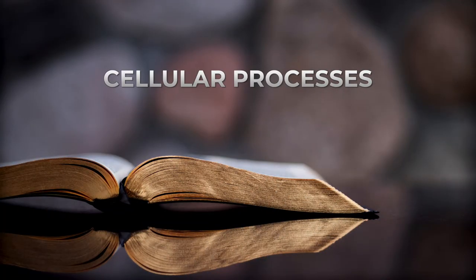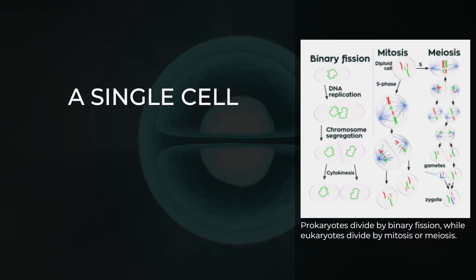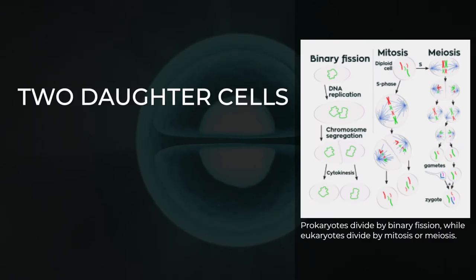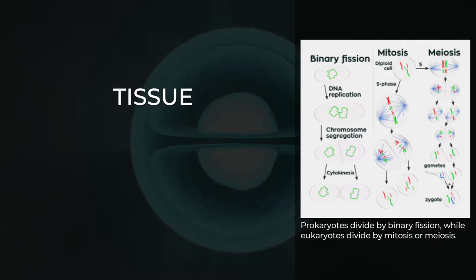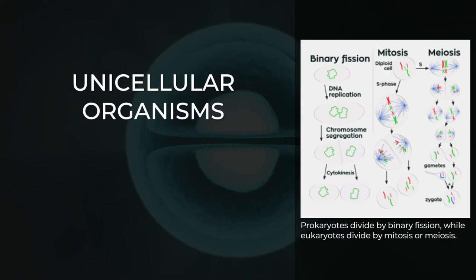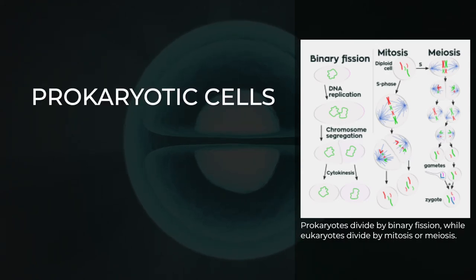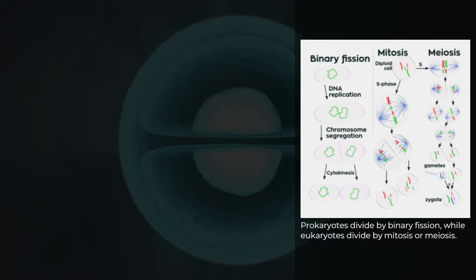Cell division involves a single cell, called a mother cell, dividing into two daughter cells. This leads to growth in multicellular organisms, the growth of tissue, and procreation, vegetative reproduction, in unicellular organisms. Prokaryotic cells divide by binary fission, while eukaryotic cells usually undergo a process of nuclear division called mitosis, followed by division of the cell called cytokinesis.